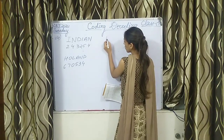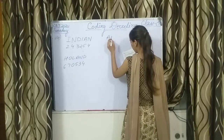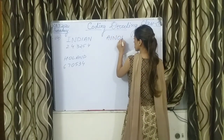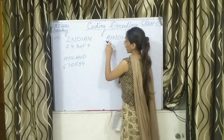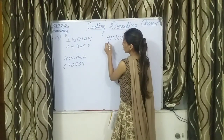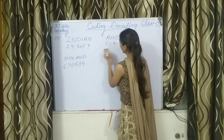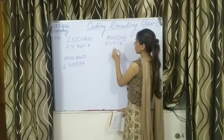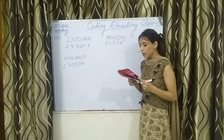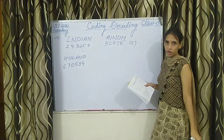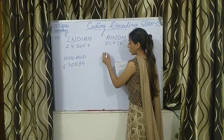So what will be the code of E, I, N, O, H? Coding of E is 5, coding of I is 2, coding of N is 4, coding of O is 7, coding of H is 6. So our answer is 52476. You will see that option C is correct. This is the way you will be doing this question.